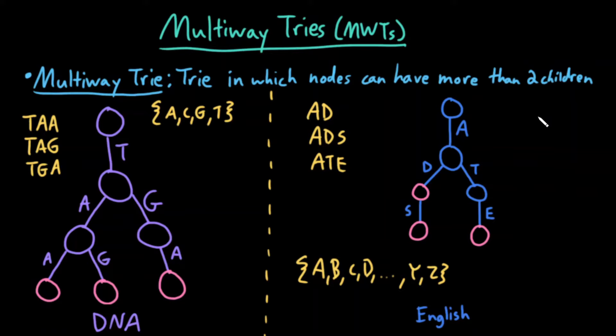What if I asked you, does the word at, A, T, exist in this multi-way trie? You might be inclined to say, well, I can go A, T successfully, so maybe it does exist.